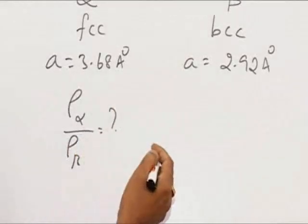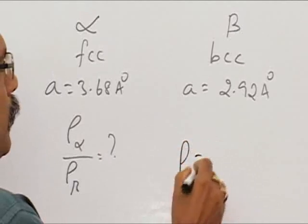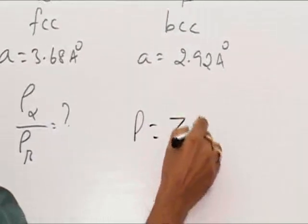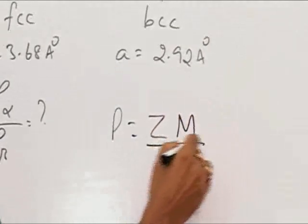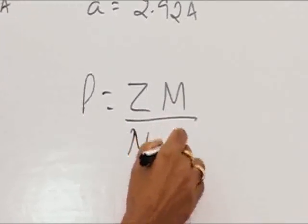Density is calculated by the formula, as I mentioned in the previous problem. Density is equal to Z times M, where Z is the number of particles per unit cell and M is the atomic mass, divided by Avogadro's constant times a cubed.